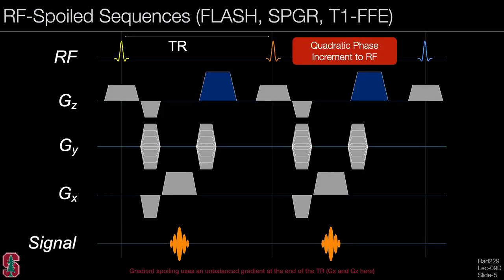The RF spoiled sequences, which go by the names FLASH, SPGR, or T1FFE, look a lot like the gradient spoiled sequence, except for one change: the RF pulse phase is incremented with a quadratic phase increment, which we will explore.